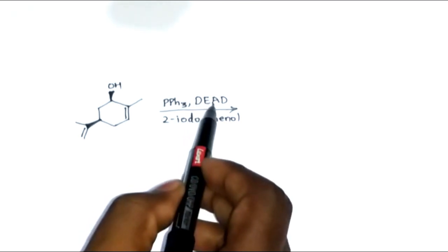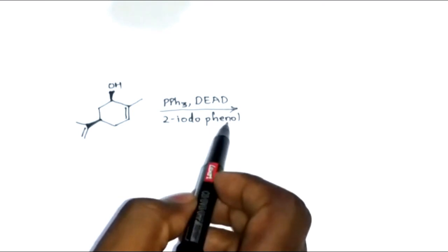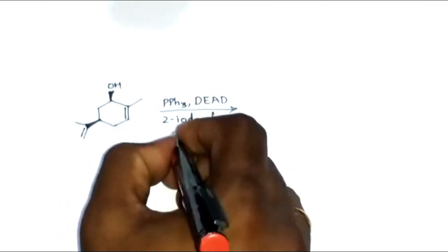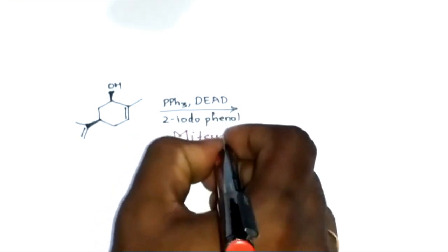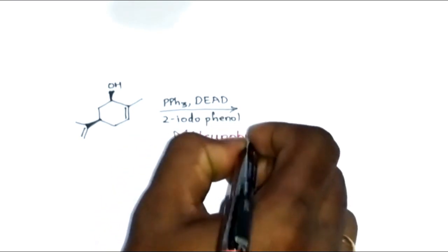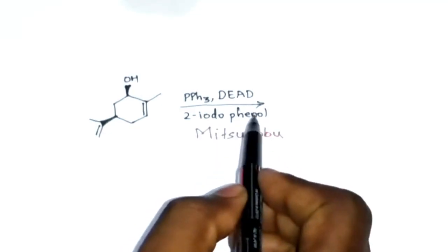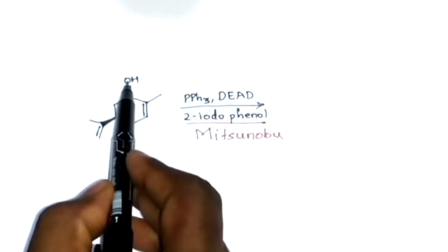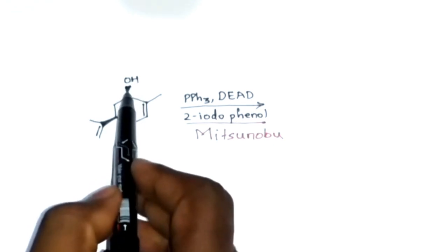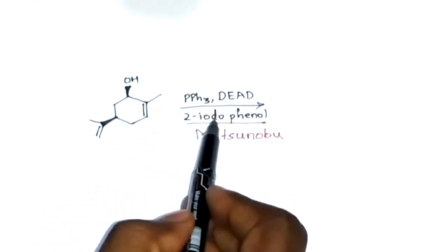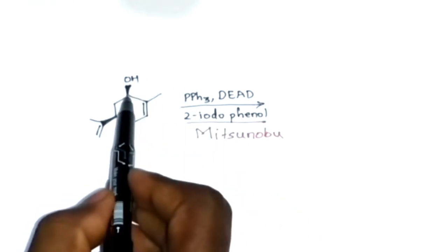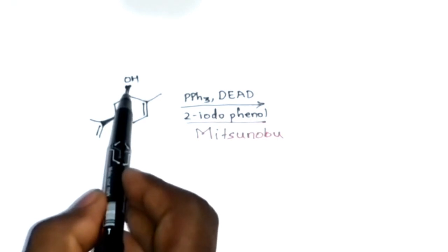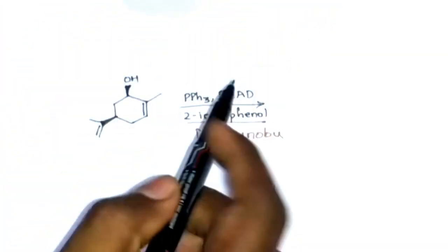This type of reagent is used in Mitsunobu reaction. In Mitsunobu reaction, this 2-iodophenol is going to replace the OH group from here. The stereochemistry of 2-iodophenol will be such that it will be opposite to the OH group.